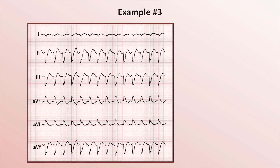Example 3. You'll notice the arrangement of leads is different here than in a standard 12-lead EKG. You could refer to this as a 6-lead rhythm strip, but the steps to assessing the rhythm are the same. Estimation of the heart rate is tricky because we can't use the 10-second rule since the strip is not 10 seconds long.